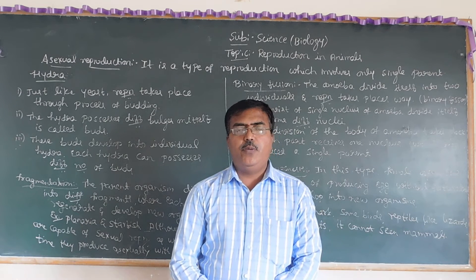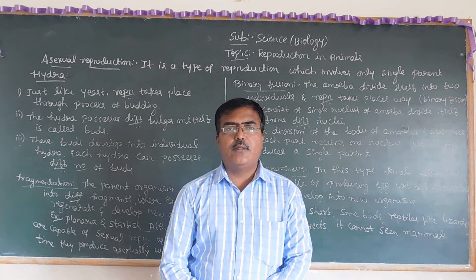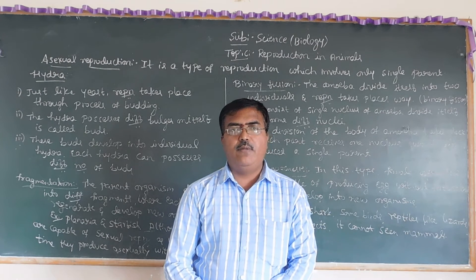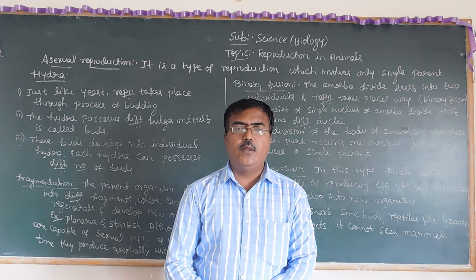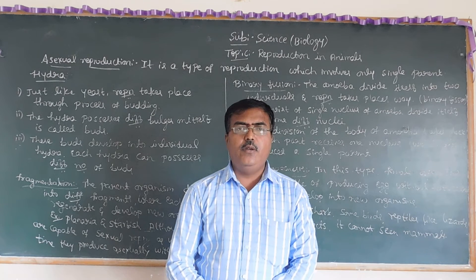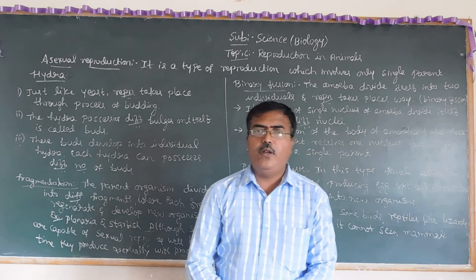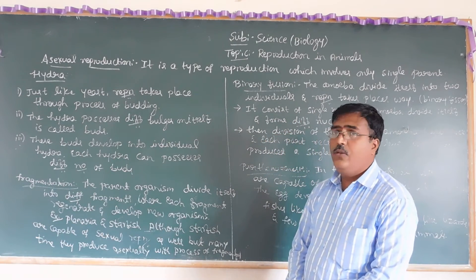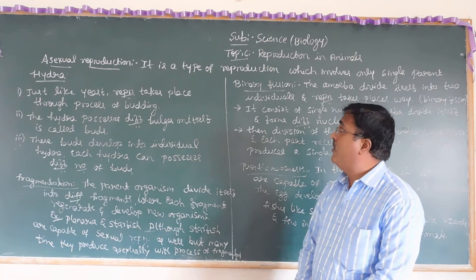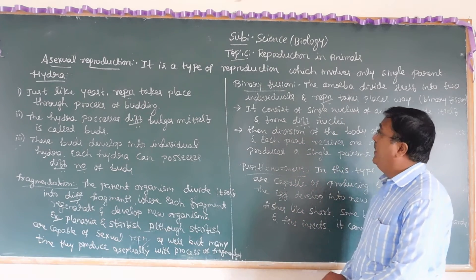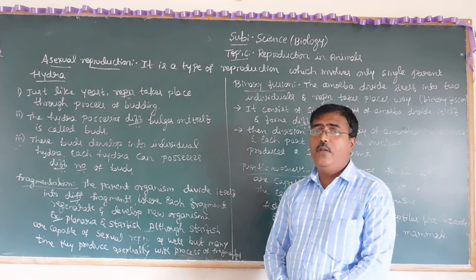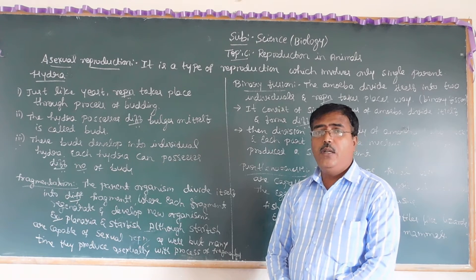Asexual reproduction is seen in lower forms of animals, not in higher organisms. Animals like amoeba and some lower organisms reproduce this way. In asexual reproduction, only a single parent — either male or female — is involved, not both.